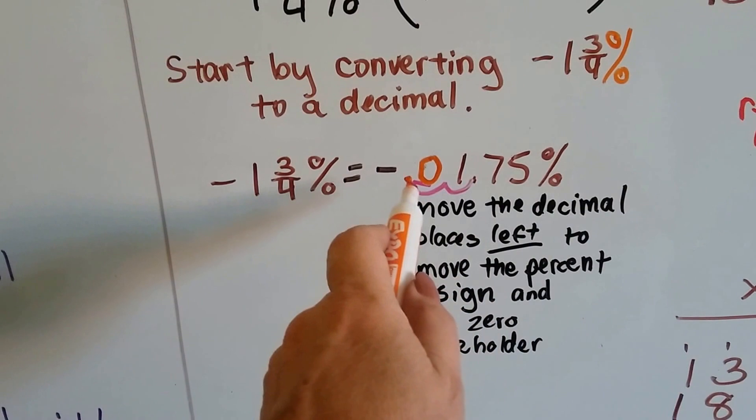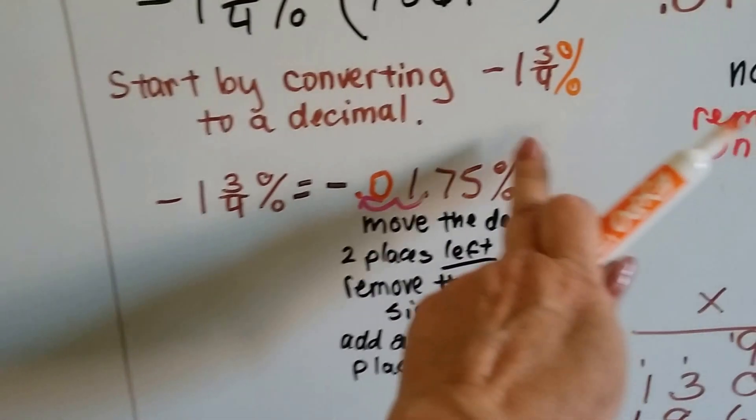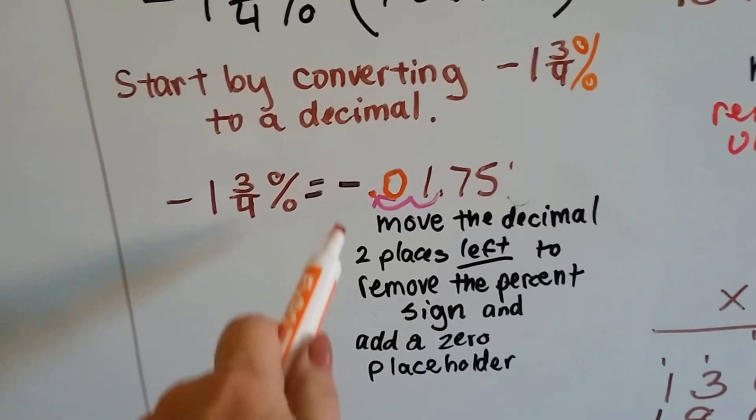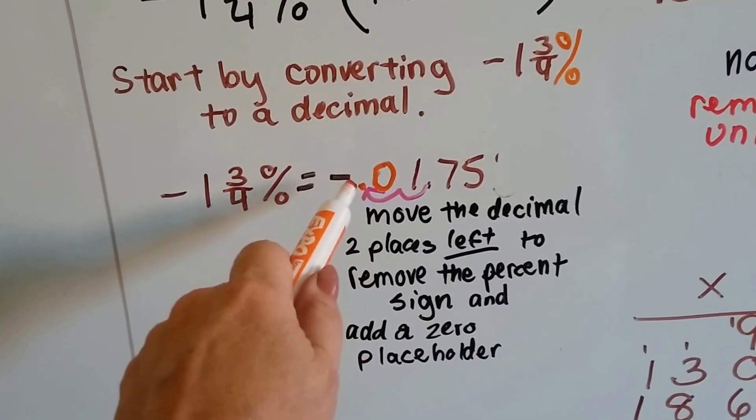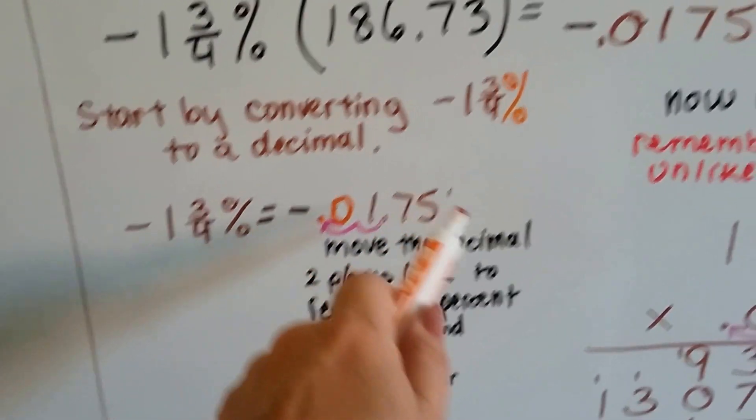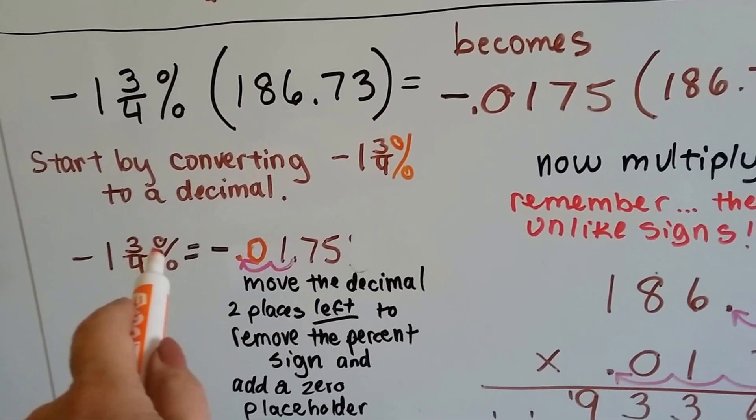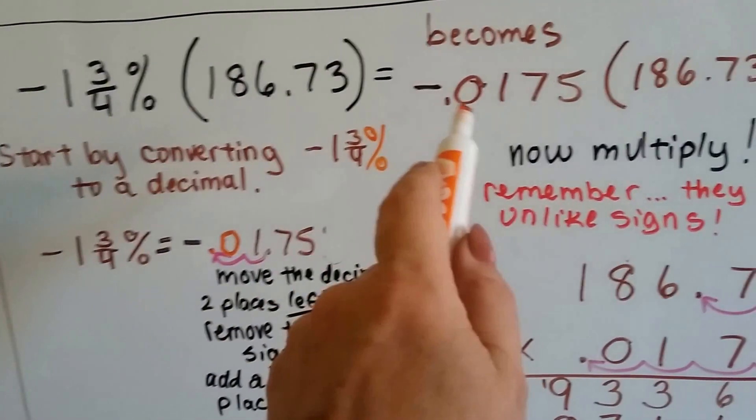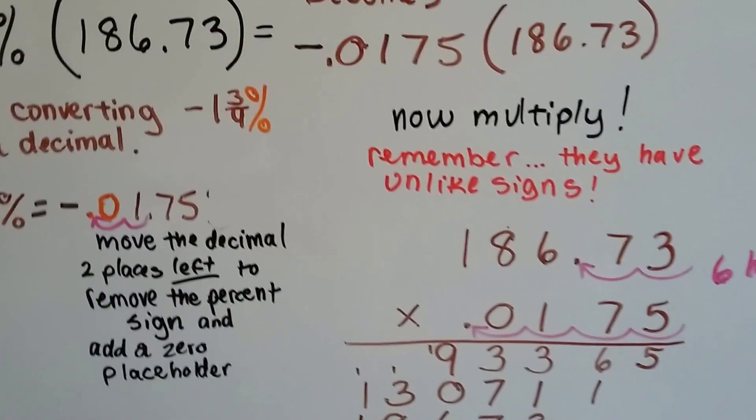It's right here, and we go one, two, and we put it there. And that'll remove this percentage sign. And then we put a zero as a placeholder in that empty spot. So now it's point zero one seven five. And remember, it's negative because it was a negative one and three-fourths percent. So that's a negative point zero one seven five. And we just multiply that to the 186.73.